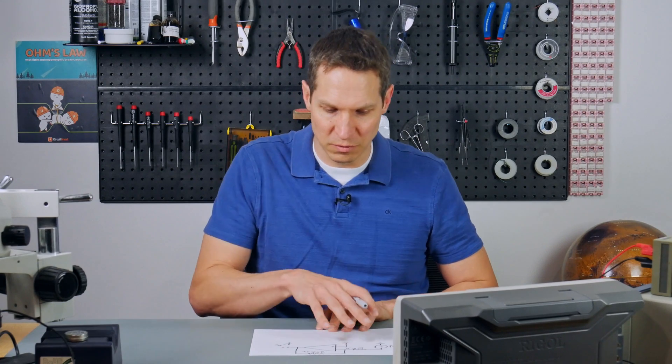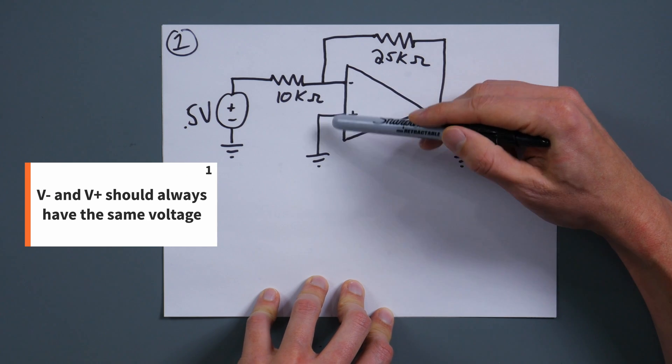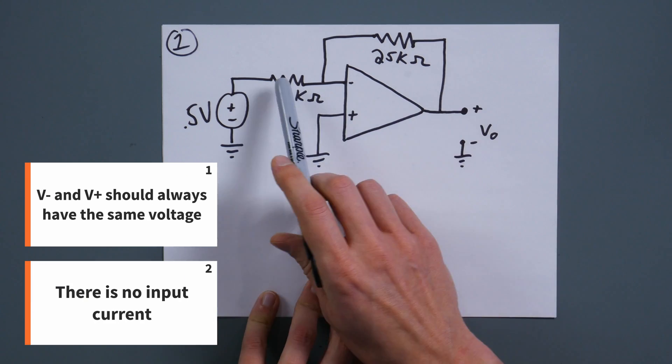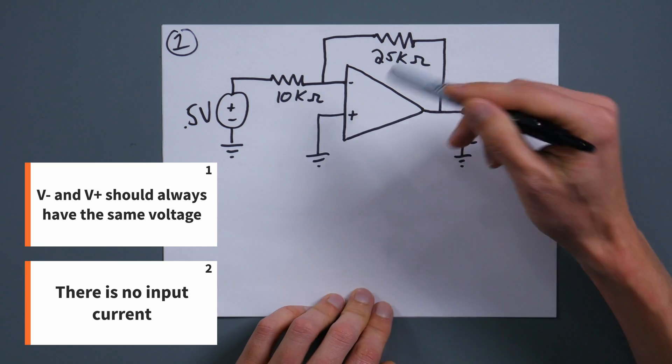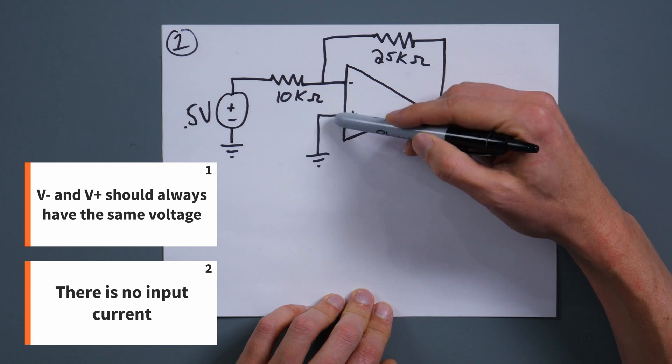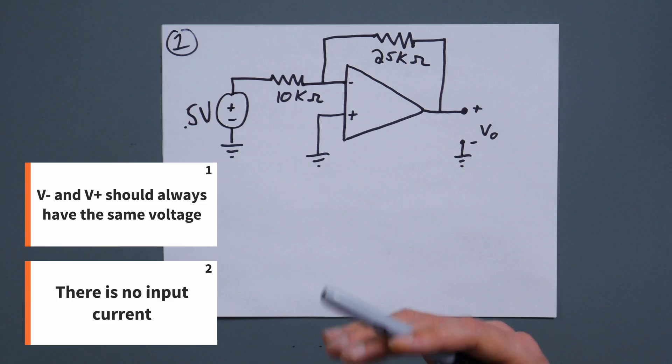As a reminder, the two rules you need to remember with op-amps: these two voltages are always going to be the same, and no current goes into these inputs. So first rule, these voltages will always be the same on the inputs. And the second rule is that the inputs have no current going in or out of them.